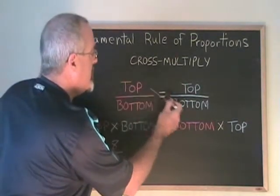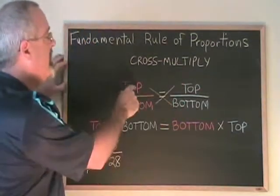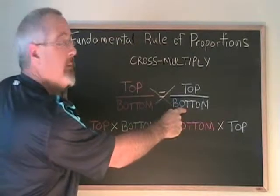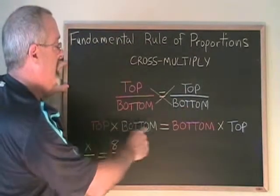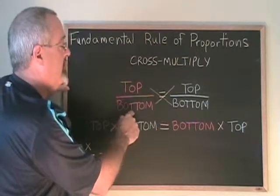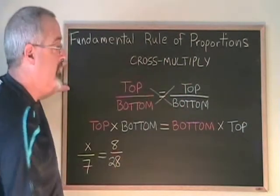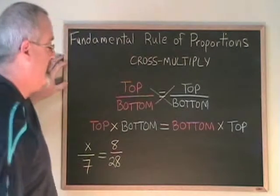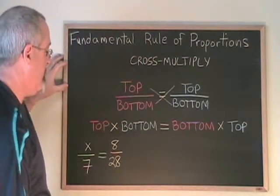Cross multiply means we multiply the top of one side by the bottom of the other and write it like this, and then that's equal to the bottom of the first side times the top of the other. We write it like that. Let's do an example to illustrate it.